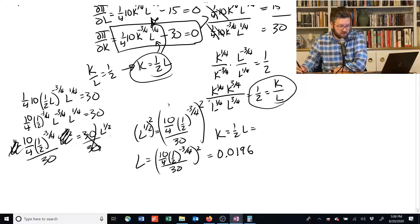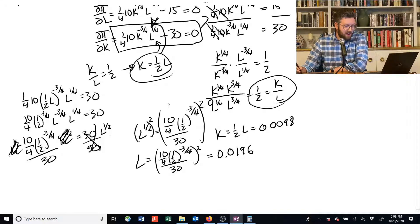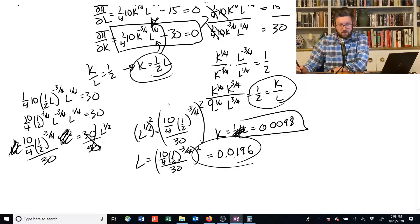K is equal to 1/2 of that level, so that means that K is equal to, so we do all that, we get L equal to 0.0196 when we run the math. K is 1/2 that, so this is 0.0098. So now we've got capital and labor.